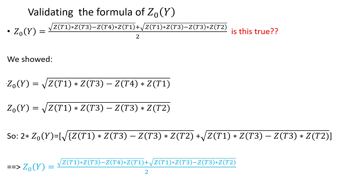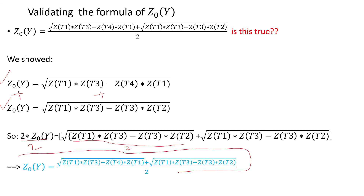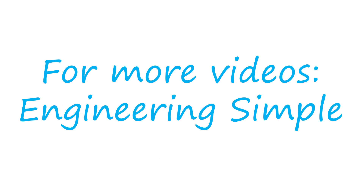So I've shown both expressions are true. Summing them — this plus this — gives two times the zero sequence of Y, then summing the two right-hand sides. Dividing everything by two, I arrive at the final formula. This proves that the zero sequence impedance of Y is equal to that quantity, so you can safely use it when calculating the equivalent T-model of a three-phase three-leg core transformer for a grounded-Y grounded-Y configuration.